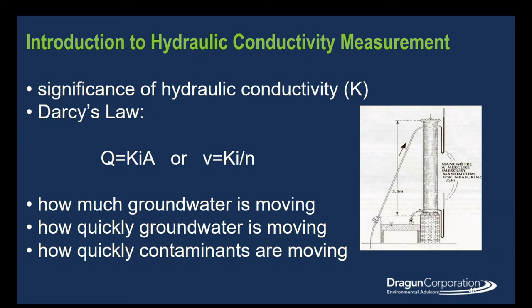One of the things we have to do is determine how quickly the groundwater and chemicals are moving. We base this on Darcy's law, which in one form states: velocity equals hydraulic conductivity times hydraulic gradient divided by the porosity. So we're going to focus on measuring hydraulic conductivity. Jason talked about water level measurements that we can use for the hydraulic gradient I, and for porosity we generally use tables from the literature. We want to know hydraulic conductivity so we can figure out how much groundwater is moving, how quickly it's moving, and as a result, how quickly contaminants are moving.